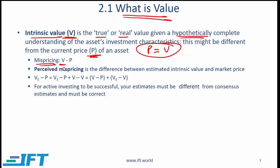That mispricing is equal to the true intrinsic value of an asset minus the market price. Since we cannot be 100% sure about V, what we then talk about is perceived mispricing. This is the difference between the estimated intrinsic value and the market price. We denote the estimated intrinsic value as VE, so VE minus P is the perceived mispricing.